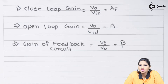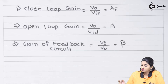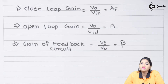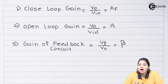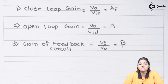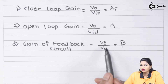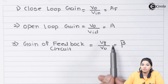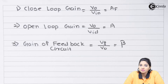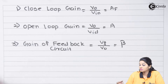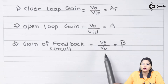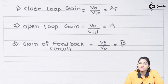The differential voltage V_id is the difference between the voltages at the non-inverting and inverting terminals. If V1 and V2 are the two voltages, then V_id equals V1 minus V2. The third term is gain of the feedback network: the output voltage V_o acts as input to the feedback network, and the output V_f is applied back as input to the op-amp. The gain of the feedback network is represented by beta, given as V_f divided by V_o.